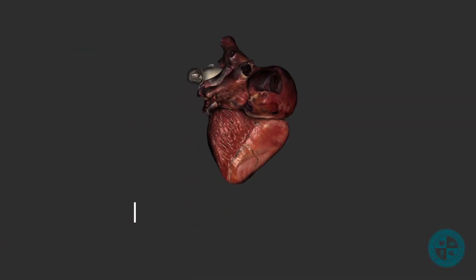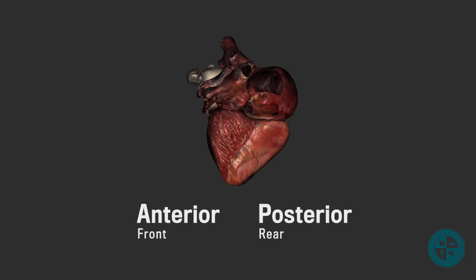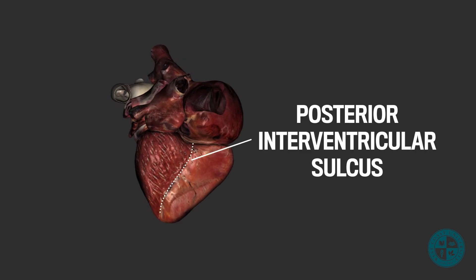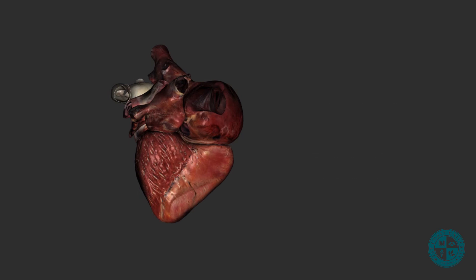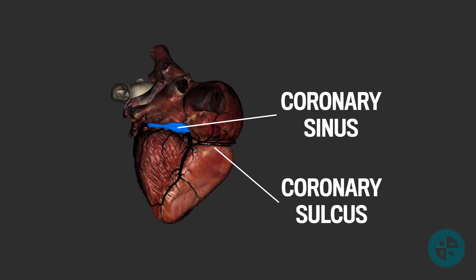Now let's flip the heart to the posterior side. On the posterior surface of the heart, we will see the posterior interventricular sulcus, which again denotes the location of the interventricular septum — where the right and left ventricles are separated. On the posterior side of the heart, within the coronary sulcus, we can make out the coronary sinus, which is the larger vein of the coronary circuit that brings the oxygen-poor blood back to the right atrium.